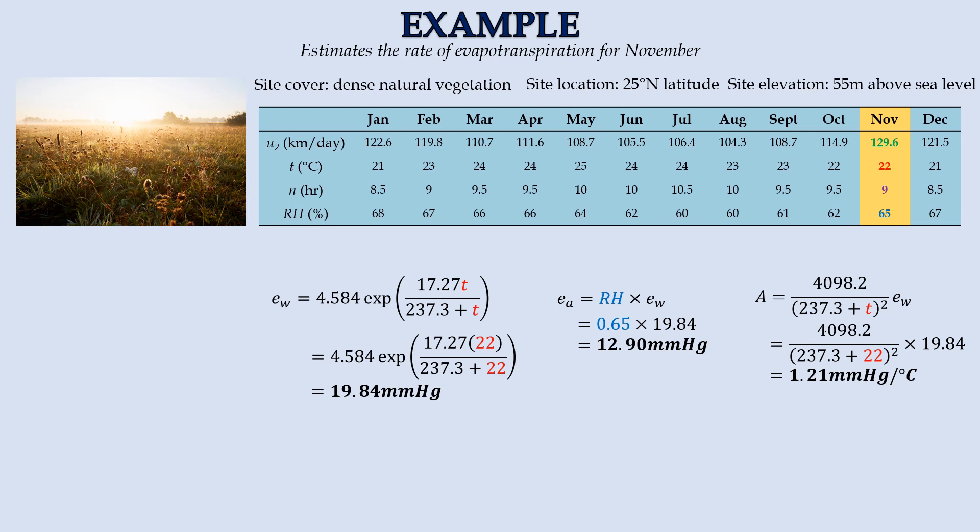The mean air temperature is 22 degrees Celsius. The saturated vapor pressure would be 19.84 mm of mercury. Then, given relative humidity of 65%, the actual vapor pressure would be 12.9 mm of mercury. The value of A is found to be 1.21 mm of mercury per degree Celsius.